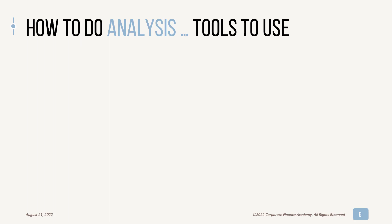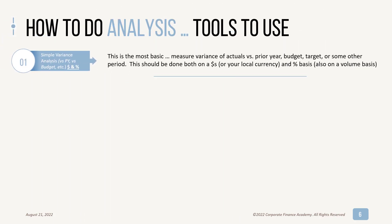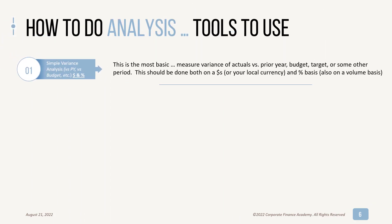How to do analysis — these are different cuts of analysis, or tools, that you can do. The first is simple variance analysis. If you're in FP&A or management accounting, you've definitely done this before — it's the most basic. This is how we measure variance: actuals versus prior year, actuals versus budget versus a target or some other period. You should look at this on both a dollar basis and a percent basis — are you up 10%? The dollars might be large but the percentage might be small, or vice versa.